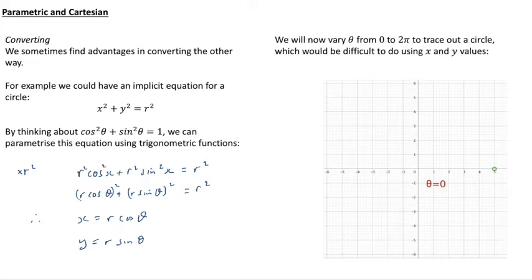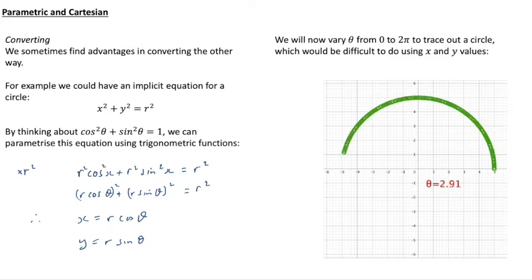And in fact if we vary θ from 0 to 2π using radians or 0 to 360 if you were using degrees, then that will trace out a full circle. Now that will be difficult to do using x and y values because we'd have to be using them twice when they're positive and when they're negative, so it's much nicer to be able to do it with a parametric form. So you can see the angle increasing from 0 through π when it gets around there and then 2π when it gets back to the beginning.